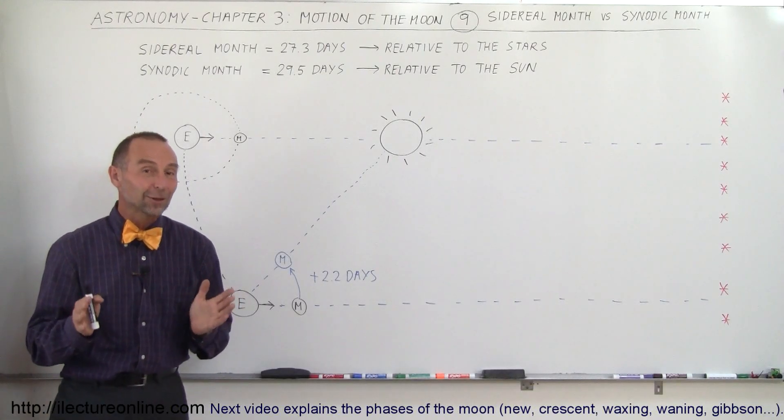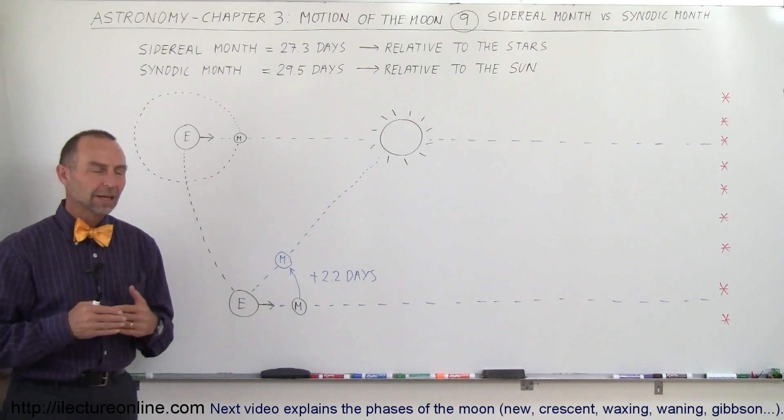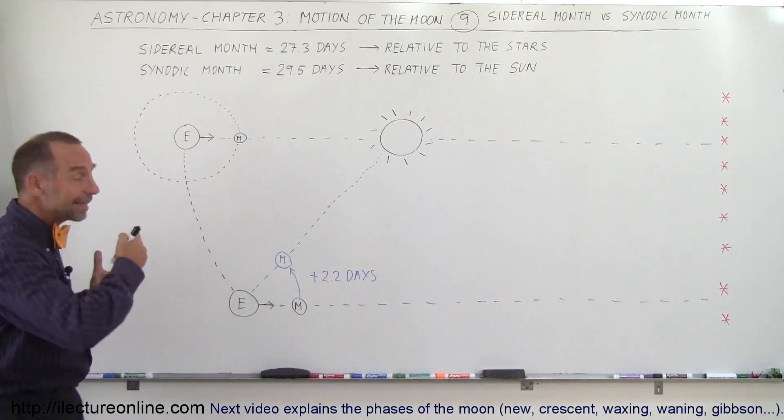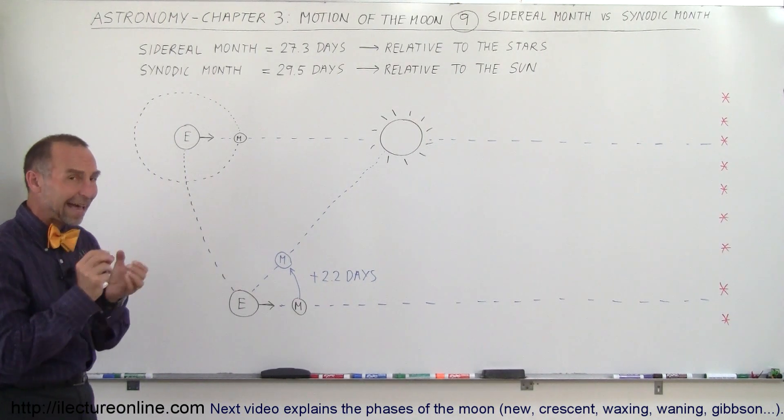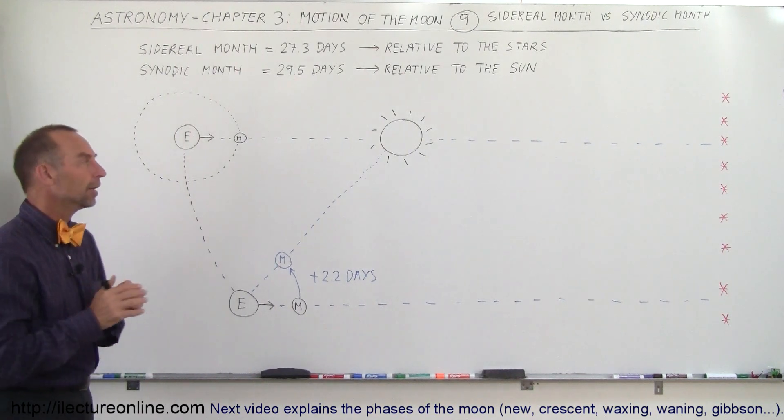Welcome to Electron Line and now let's take a look at the difference between a sidereal month and a synodic month. Now the term of a month, the duration of a month, basically comes from the fact that it takes about a month for the moon to go around the earth once. It actually takes exactly 27.3 days and that's called a sidereal month.